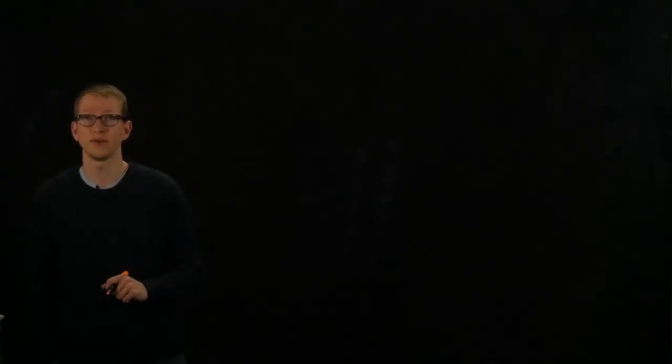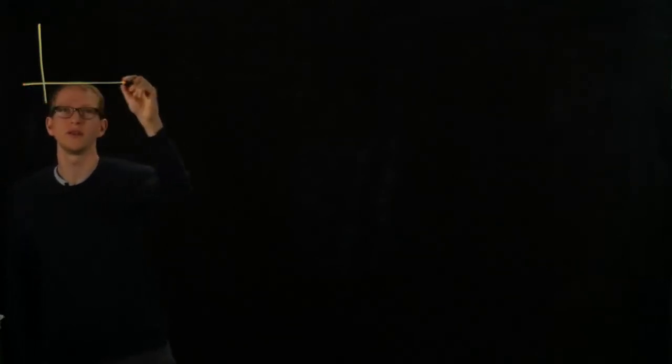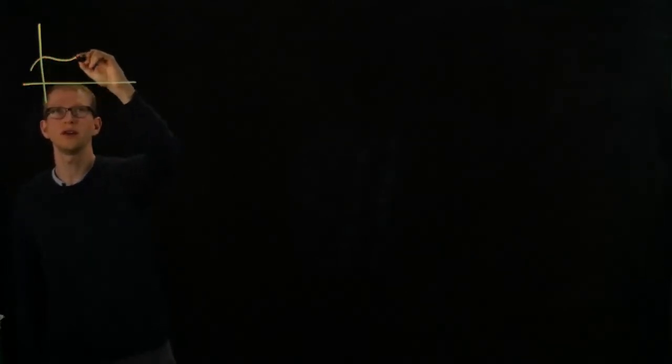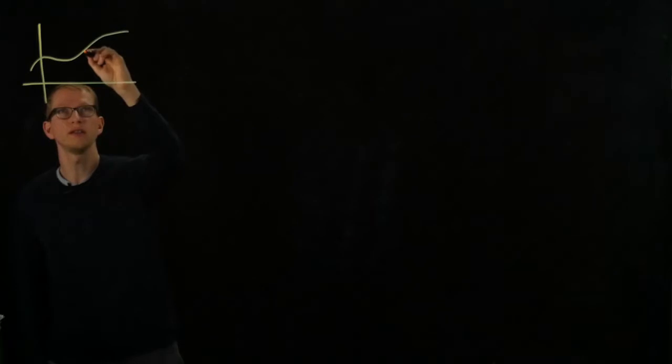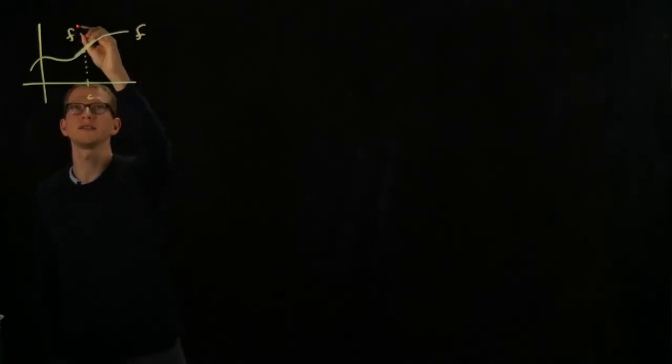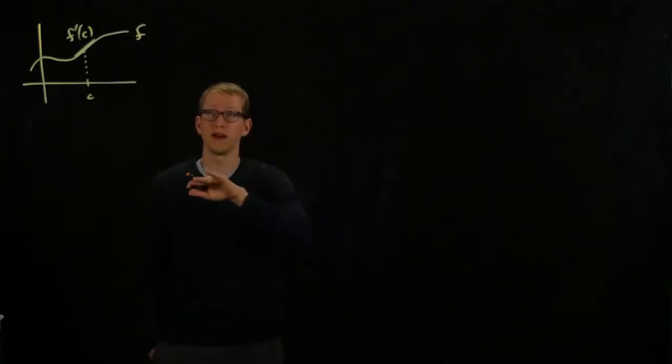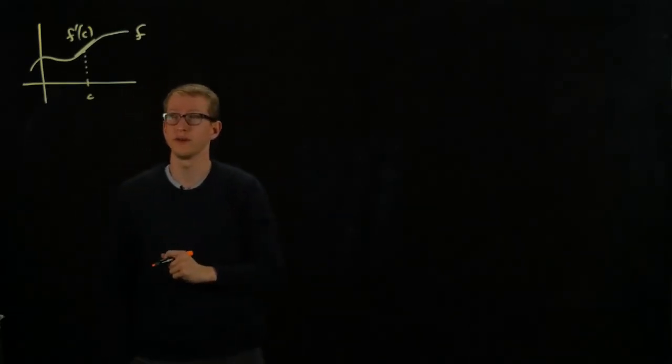In the study of functions of a single variable, we learn that the derivative of a function at a point is the slope of the graph of that function. Recall intuitively that if a function is differentiable at a single point, then the derivative of f at c is interpreted as the slope of the function at that point when it's well-defined.